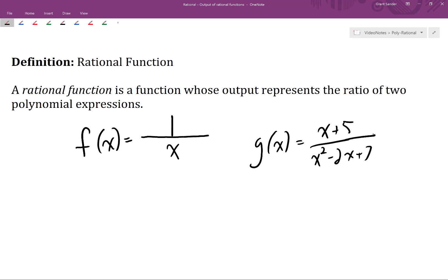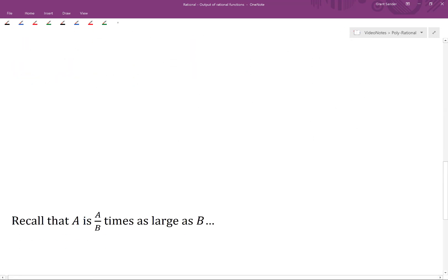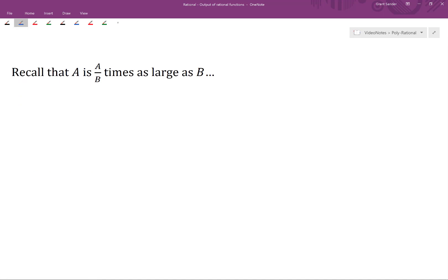To make sense of the output of these rational functions, let's take a step back and recall that any number a is a divided by b times as large as b. So this ratio, a divided by b, tells us the size of a relative to b. As an explicit example, 5 divided by 4 is equal to 1.25, and this tells us that 5 is 1.25 times as large as 4.